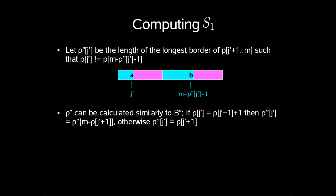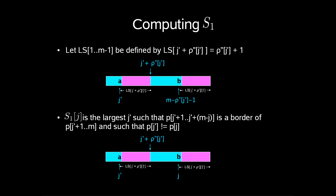Let index j prime in ro double prime be the length of the longest border of p[j prime plus 1] up to m such that p[j prime] is different from p[m minus ro double prime[j prime] minus 1]. Ro double prime can be calculated similarly to b double prime. If index j prime of ro is set to index j prime plus 1 in ro plus 1, then index j prime of ro double prime is set to index m minus ro[j prime plus 1] of ro double prime. Otherwise, index j prime of ro double prime is set to index j prime plus 1 of ro. Now let ls from 1 up to m minus 1 be defined such that index j prime plus ro double prime[j prime] of ls is set to index j prime of ro double prime plus 1.